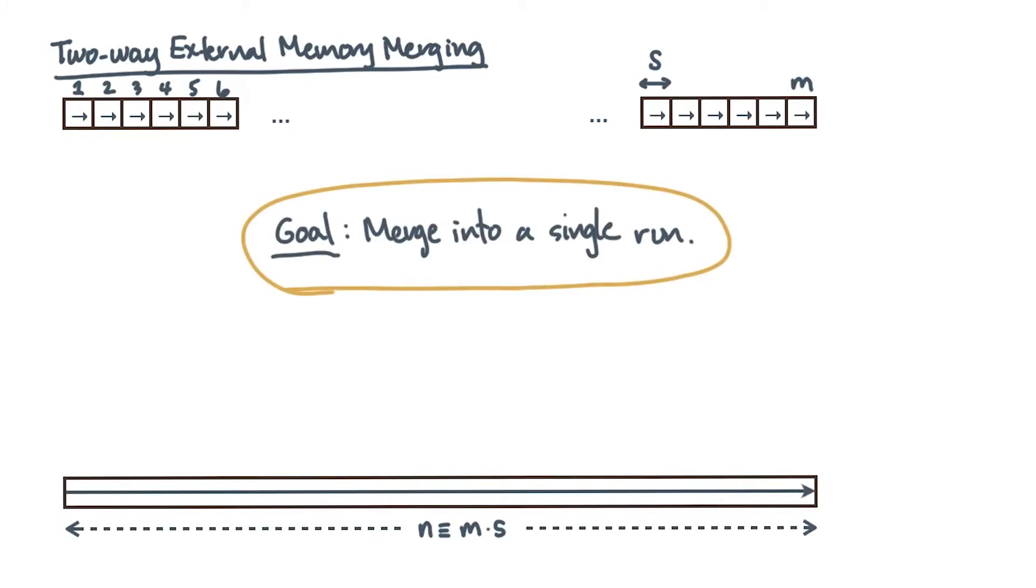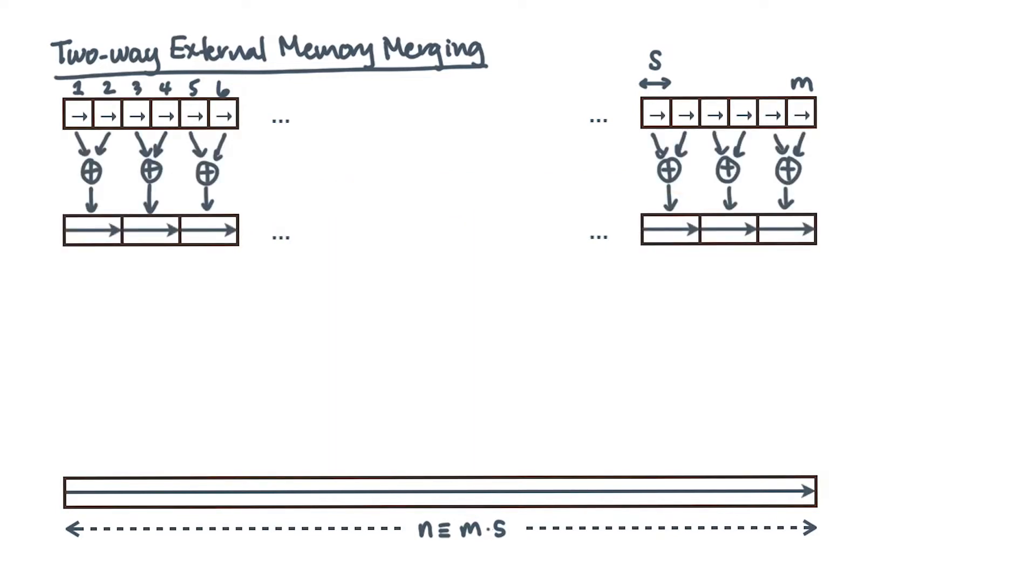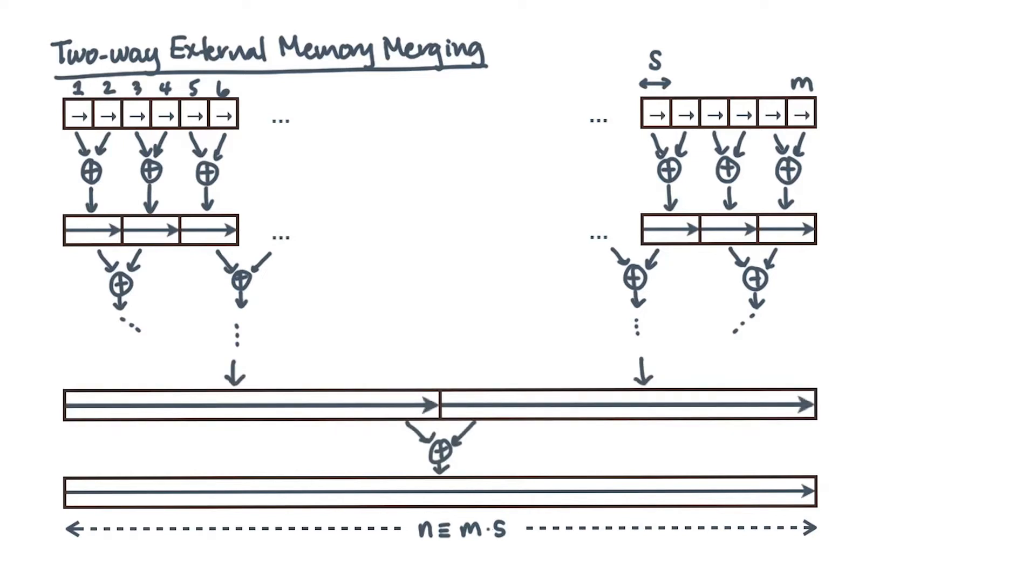An easy scheme based on the classical merge sort idea is to merge pairs of runs, then pairs of pairs, and so on until you get a final single run. Observe what happens at each level. At each level k starting at 0, the run size is 2^k × s.